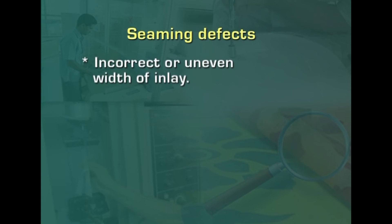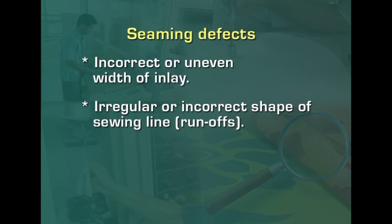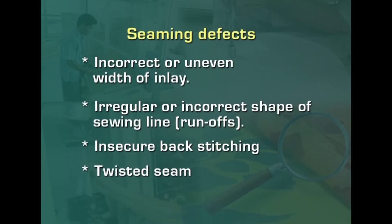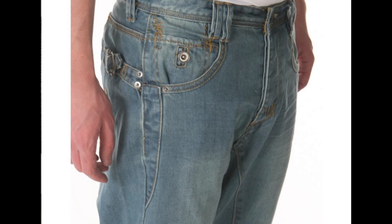Coming to seaming defects: incorrect or uneven width of inlay arising from bad handling by the operator, incorrectly set guide, or incorrectly adjusted folder. In extreme cases the seams burst open, show ridges, thread slippage of weave threads occurs, or notches are exposed. Irregular or incorrect shape of sewing line — sometimes called runoffs in top stitching — arising from lack of or badly set guide, not following a mark, or incorrect handling. Insecure backstitching where subsequent rows do not cover the first row of stitching. Twisted seams leading to irregular puckering or garment parts not hanging correctly, caused by improper alignment of fabric parts, mismatched notches, and allowing one ply to creep against the other.